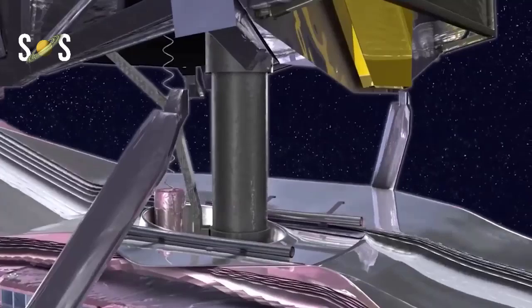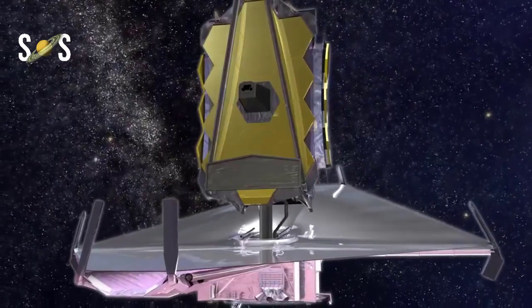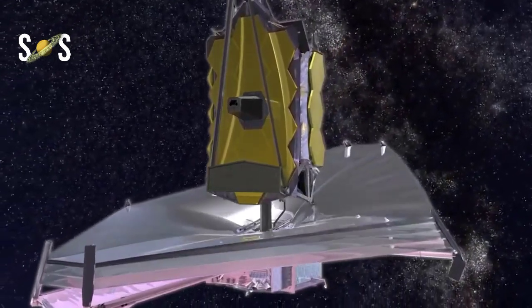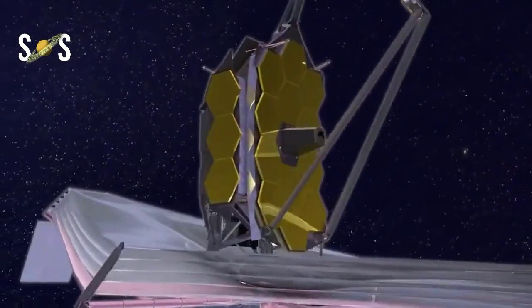Each of the telescope's mirrors are covered in a microscopically thin layer of gold, which optimizes them for reflecting infrared light, the primary wavelength of light this telescope will observe.